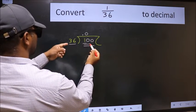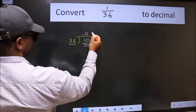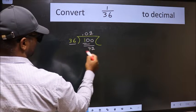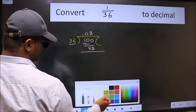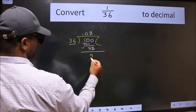A number close to 100 in the 36 table is 36 times 2, which is 72. Now we should subtract.